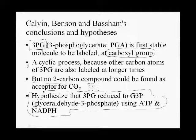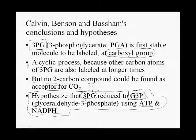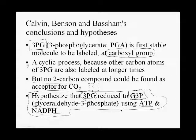Being good biochemists, they hypothesized that 3-phosphoglycerate would be reduced by the products of the light reactions — ATP and NADPH — to another 3-carbon sugar called glyceraldehyde-3-phosphate. They hypothesized this because both are intermediates of glycolysis. In glycolysis, glyceraldehyde-3-phosphate is gradually oxidized to 3-phosphoglycerate, generating ATP and NADH. Since the light reactions produce ATP and NADPH, it made sense to partially reverse glycolysis and use NADPH to convert 3-phosphoglycerate to glyceraldehyde-3-phosphate.